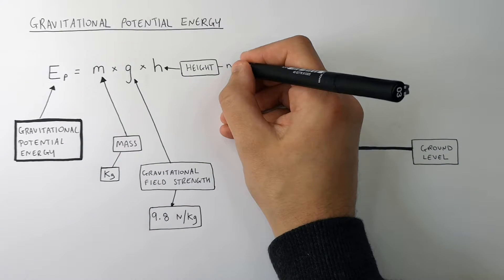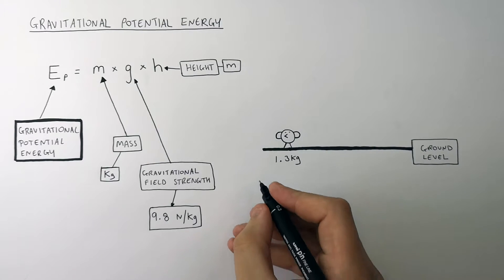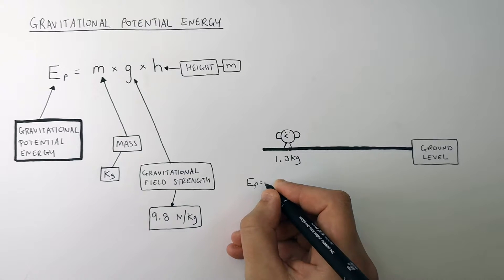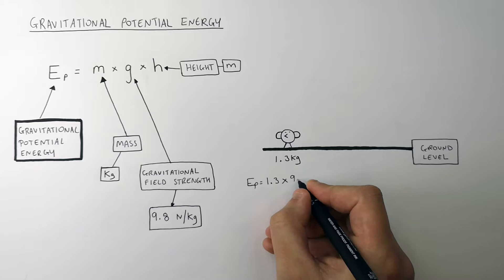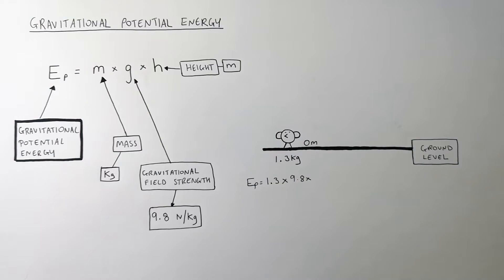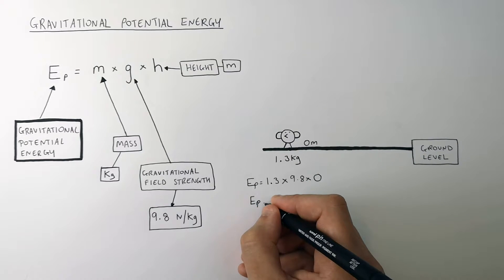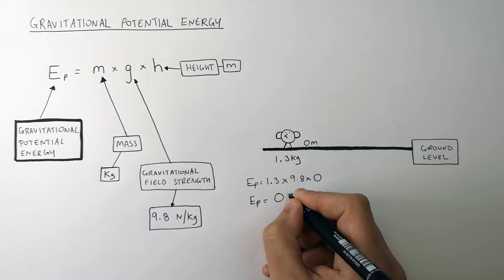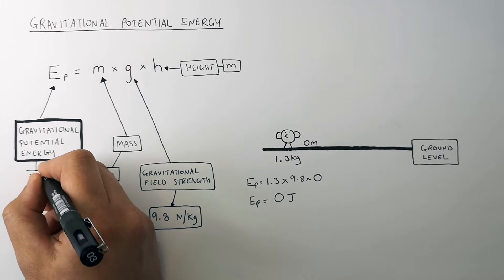The bird is 0m above the ground — it is on ground level. So to work out the gravitational potential energy stored in the bird, you multiply the mass (1.3kg) times the gravitational field strength (9.8) times the height (0). Multiplying those numbers together, the gravitational potential energy stored in the bird equals 0 joules.